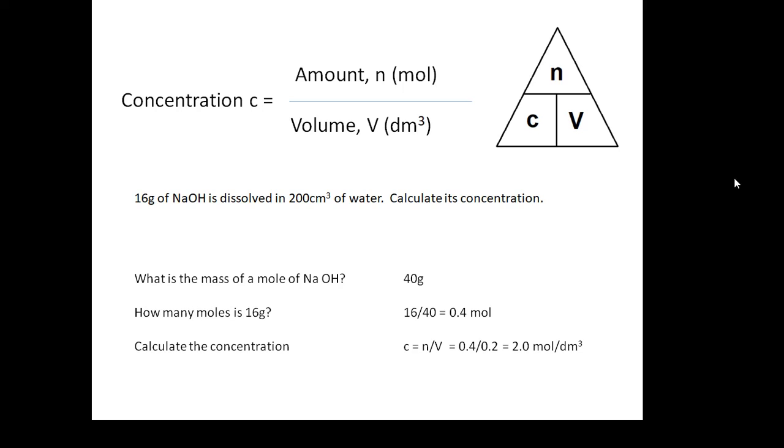A mole of sodium hydroxide is 40 grams. That's the relative formula mass. So 16 grams will be 16 over 40, which is 0.4 moles. The concentration will be 0.4 divided by 0.2. That's 0.2 of a litre or decimetre cubed. So, 2 moles per decimetre cubed.